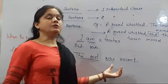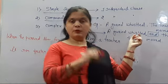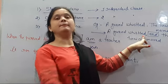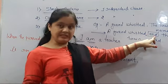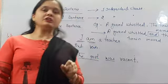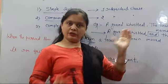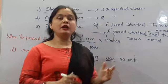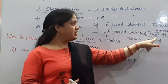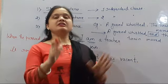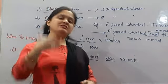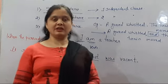And one more important thing: there must be a comma after the first independent clause, after that the conjunction, and after that the second independent clause. In a compound sentence when we join two clauses — both clauses are independent — we write the first independent clause, then put a comma, then use the conjunction, and then write the second clause. The conjunction can be: and, but, so, therefore — I will give you the full list.